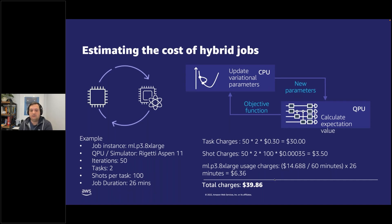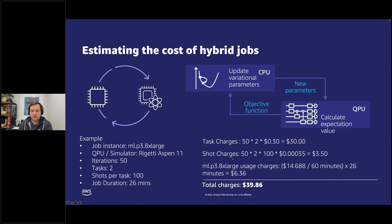For example, if we have a hybrid job that's going to run for 50 iterations comprised of two tasks, and each one of those tasks has 100 shots, you can see in the example on the right of your screen that our task charges are going to amount to $30 — that's a fixed charge. The shot charges are going to be $3.50, because we're running 100 shots per task, two tasks, 50 iterations.